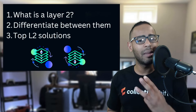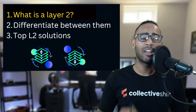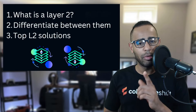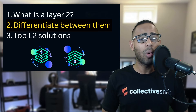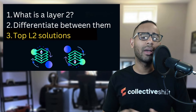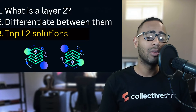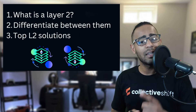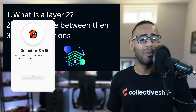I'm going to be covering three major topics here. Number one, what is an Ethereum Layer 2 in the first place? Number two, how do you differentiate between all of them? Because there are quite a few Layer 2 scaling solutions. And then number three, we're going to have a quick look at the top Layer 2 scaling solutions for Ethereum — Optimism and Arbitrum are the top ones at the moment.